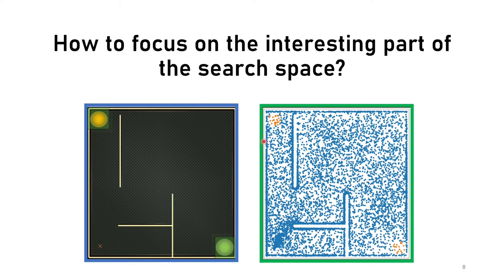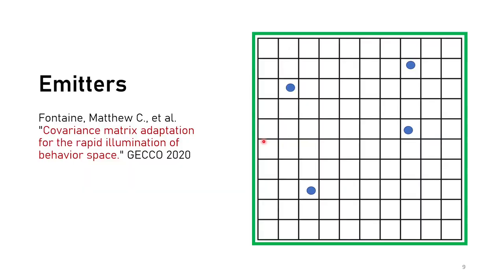With SERENE, we address this problem using the concept of emitters — a powerful concept introduced by Fontaine and colleagues in their paper on Covariance Matrix Adaptation for the Rapid Illumination of Behavior Space. An emitter is an instance of a reward-based algorithm that performs local search around a point in the search space. The original algorithm, called CMA-ME, is based on MAP-Elites. It generates a set of policies, extracts their behavior descriptors, selects one policy, and uses it to initialize an emitter — that is, the initial population of the local search reward-based algorithm.